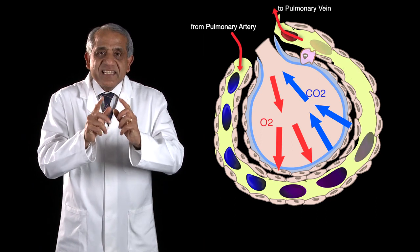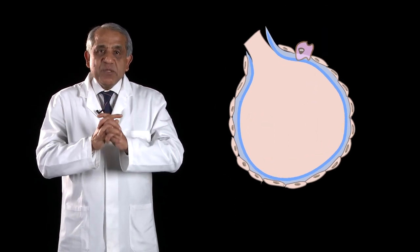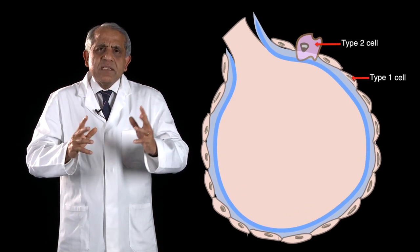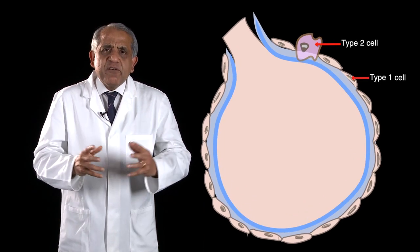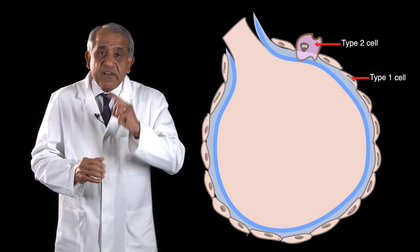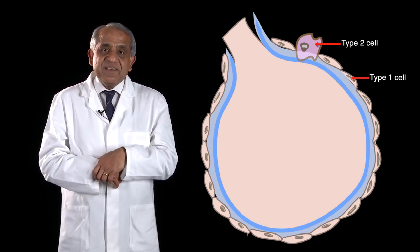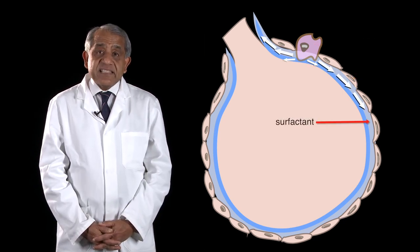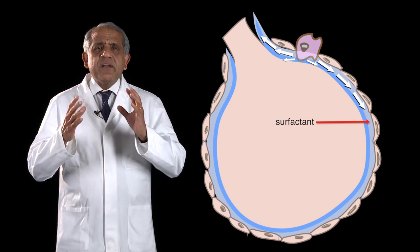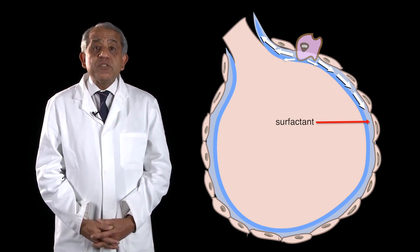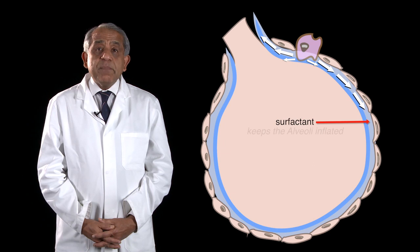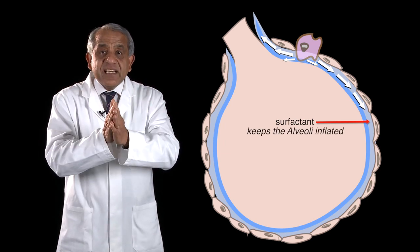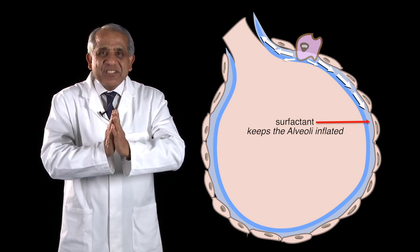Now what about the type 2 cell? The type 2 cell is quite an interesting cell. There is perhaps about one type 2 cell for every 100 type 1 cells, but it performs a very important function. It elaborates and secretes surfactant, which performs the important function of reducing surface tension and keeping the alveoli inflated. In the absence of surfactant, all the alveoli would collapse, preventing gaseous exchange.